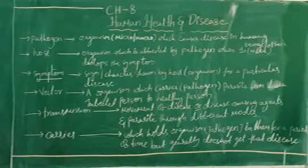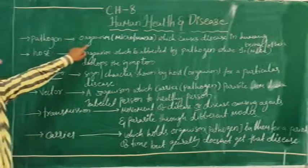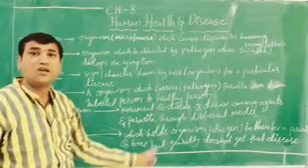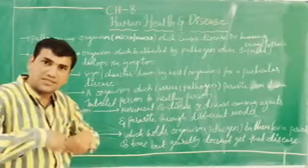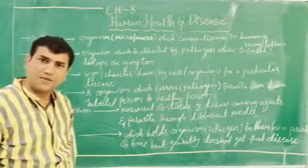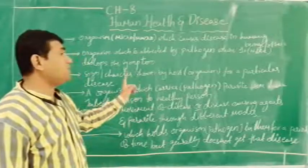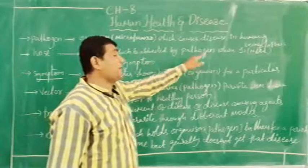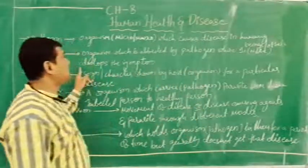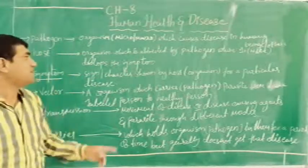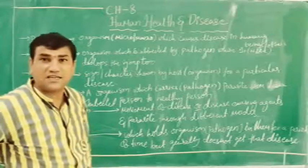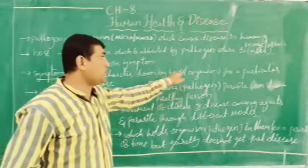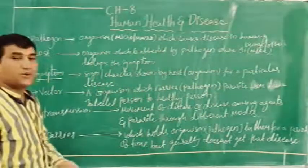Here you are seeing certain definitions. First, pathogen — organism which causes disease in human beings and others, and which lives inside or on the surface of the body of the host, and which can create harm for the host. Host means organism which is affected by pathogen where it develops the symptom — that is, the signature of a condition of disease. Symptom is a sign or character shown by the host for a particular disease due to infection.